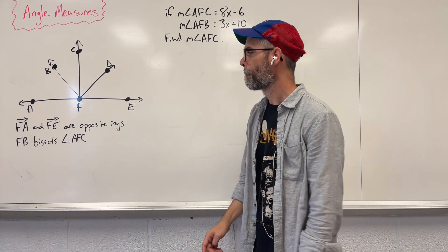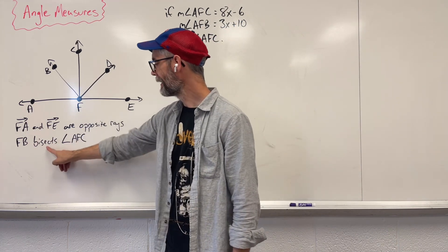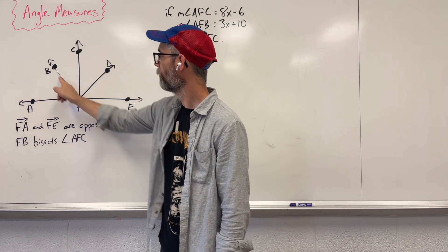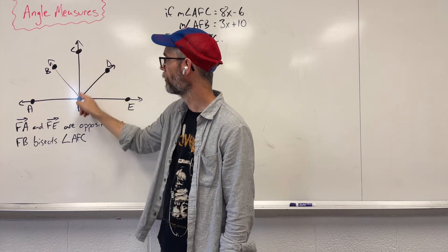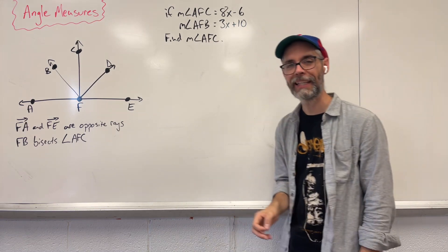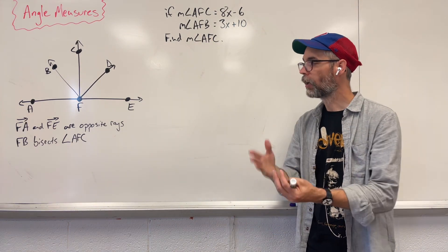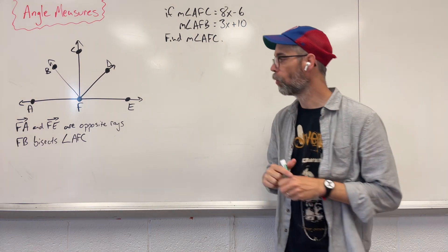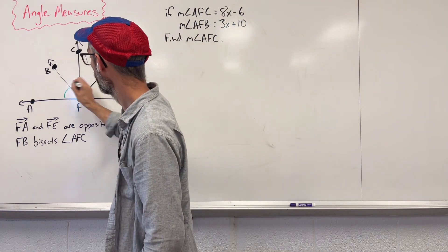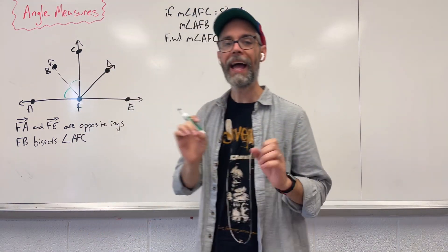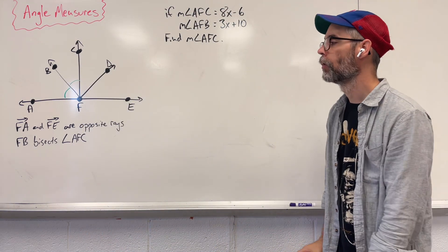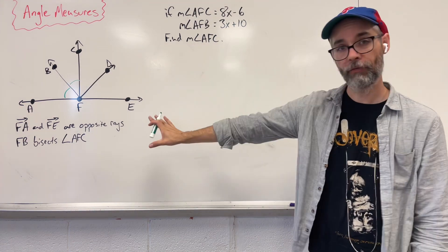FB bisects angle AFC. When you have something that bisects, bi means two, it cuts that angle into two equal parts. So I know that that and that have the same value. Okay, that's for the picture.